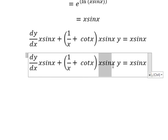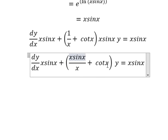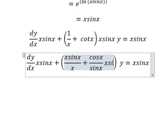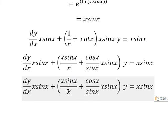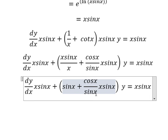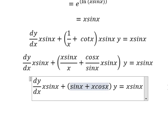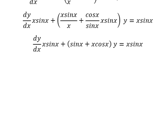x sine x multiply by one over x and cotangent x. We have sine x, sine x, sine x. We simplify and we have x cosine x. Next we need to integrate both sides.